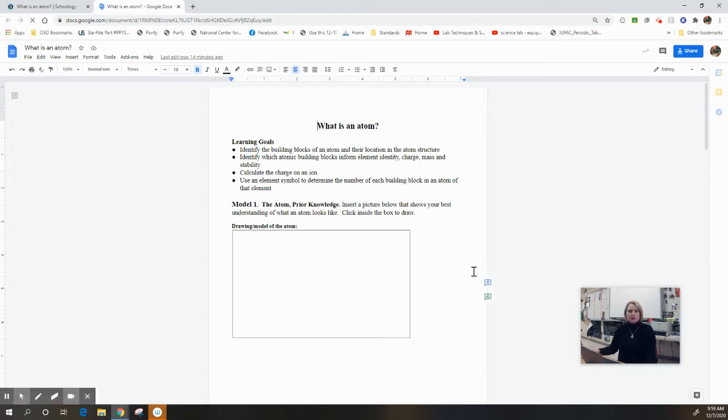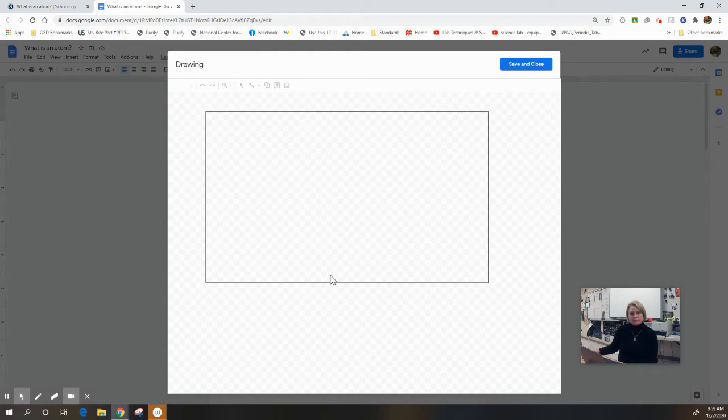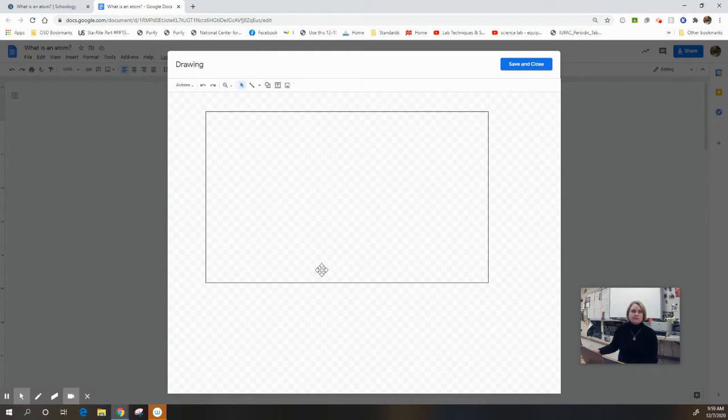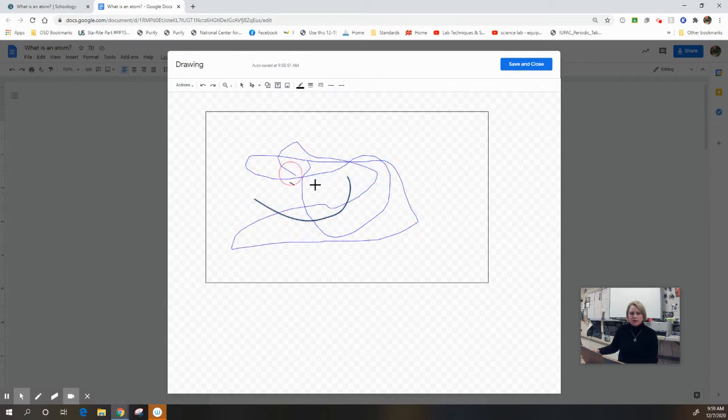So, to do that, you're going to draw a picture. And to draw this picture, what you're going to do is you're going to double-click on the rectangle. And when you double-click on the rectangle, you can draw. Grab the scribble tool and you can draw a picture as you think an atom might look.